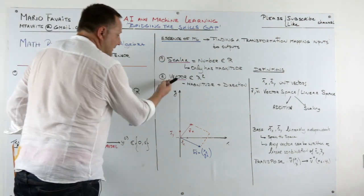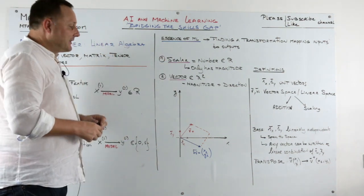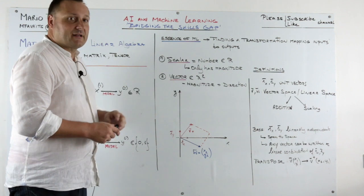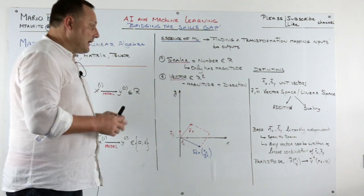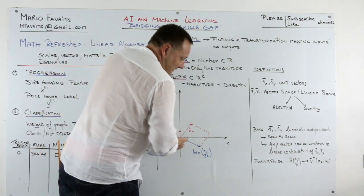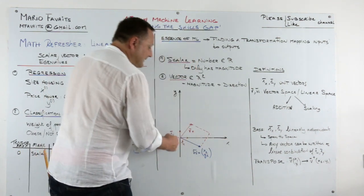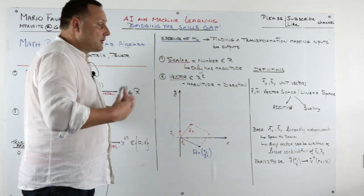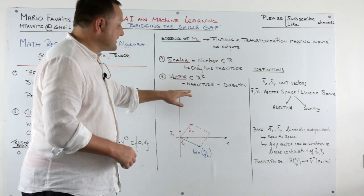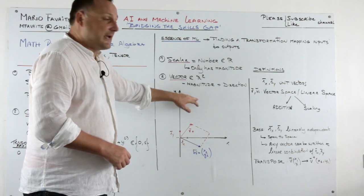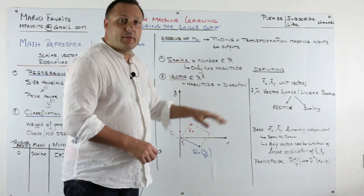The next number or block of numbers are vectors. And vectors are elements of R squared. Why R squared? Well, there is R on the x side and there is R on the y side. So we call this R squared. The difference is here that a vector not only has a magnitude, it also has a direction.